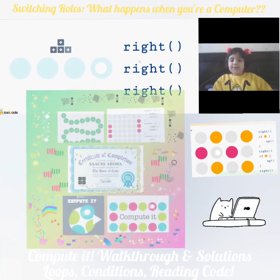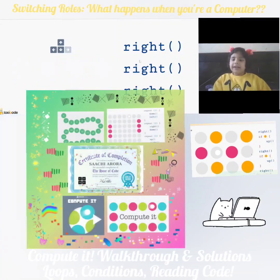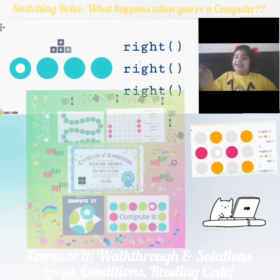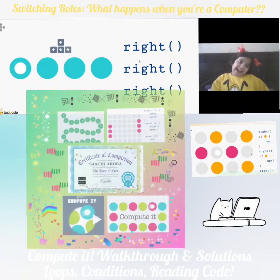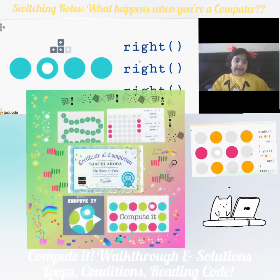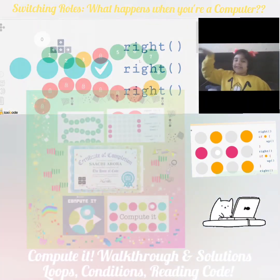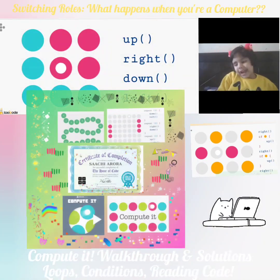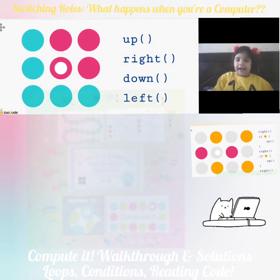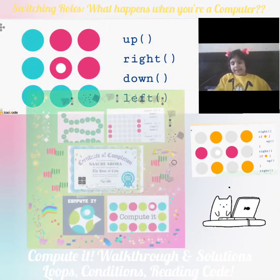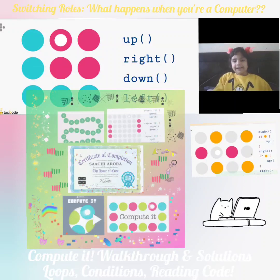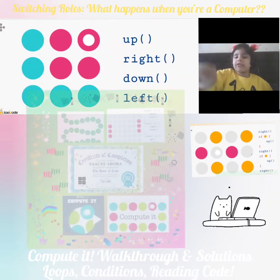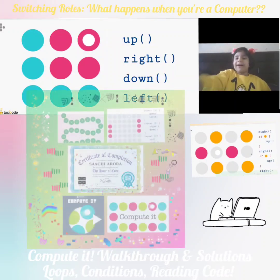If you press a wrong button, it will reset and start again. And when you make the correct button press, you can do it correctly. This time let's go up, right. We have to follow these instructions in Python.